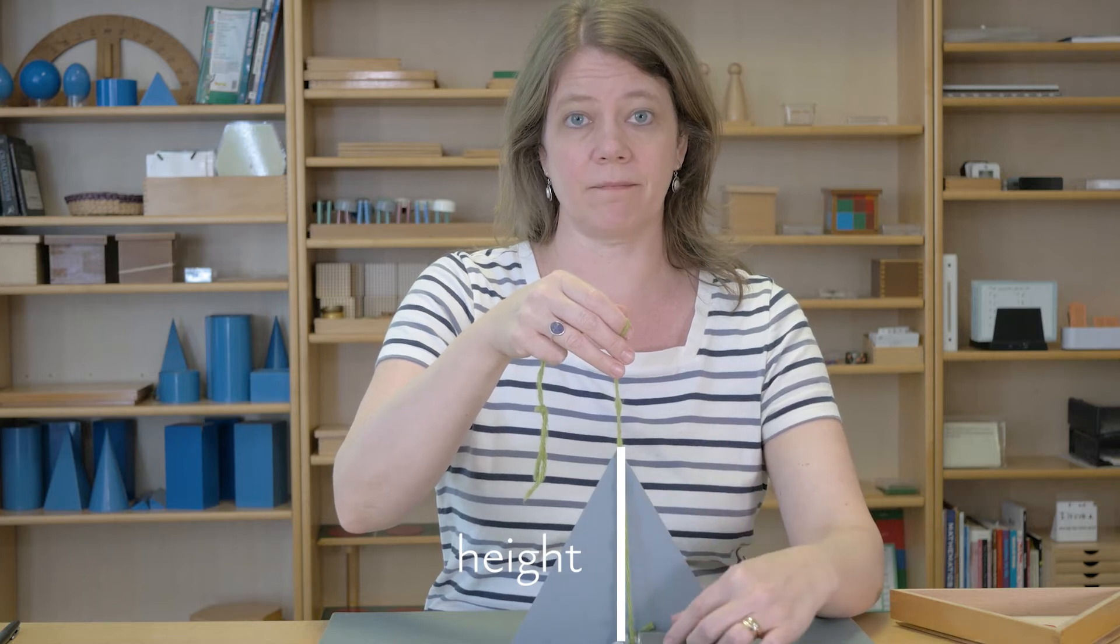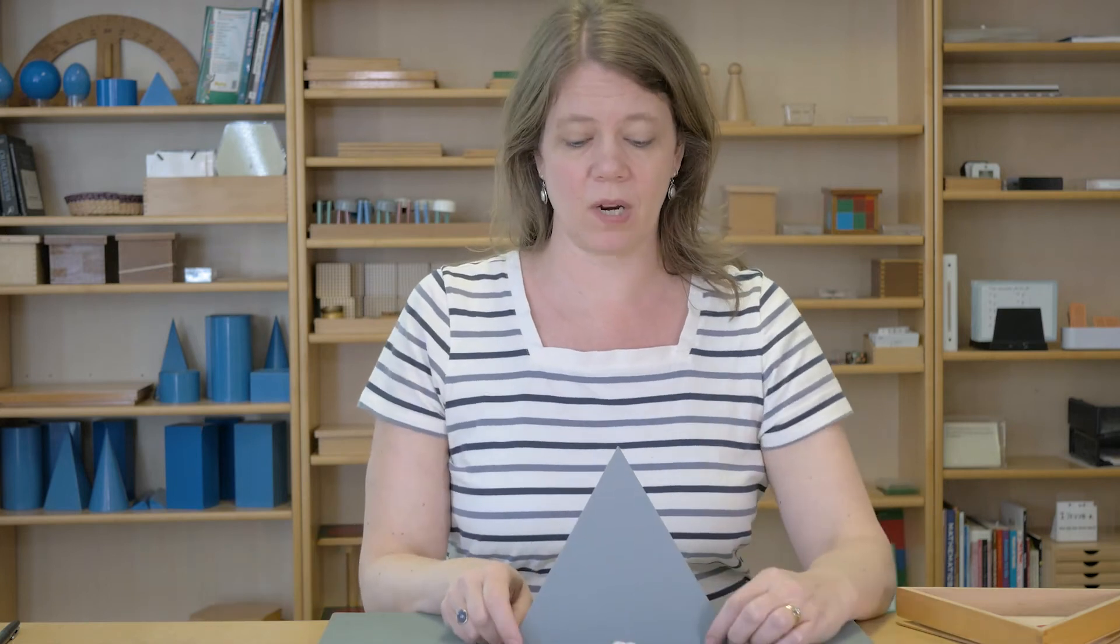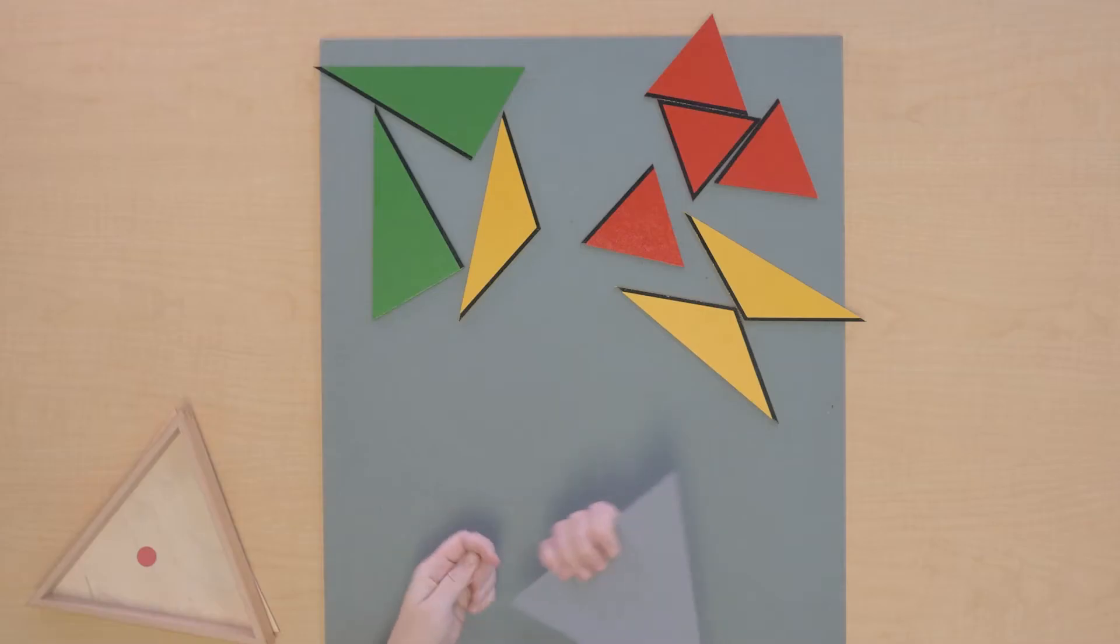This is the height and our base is right here at the bottom, and the base is there of the triangle whether we have it upright like this or sitting flat on the table like this. This is our base and this is our height.